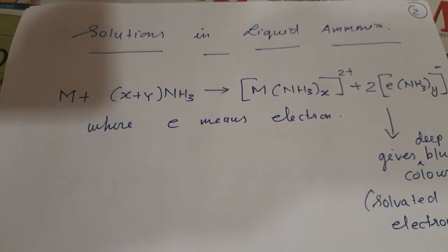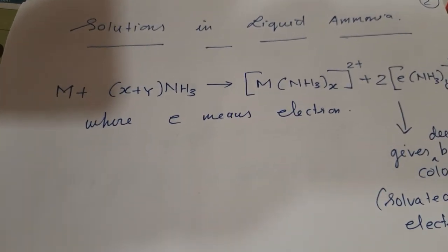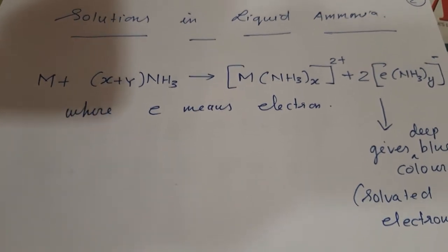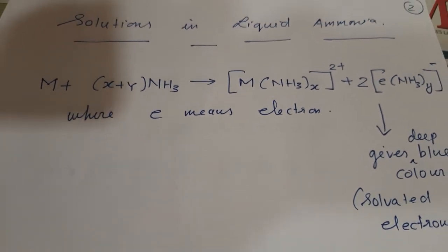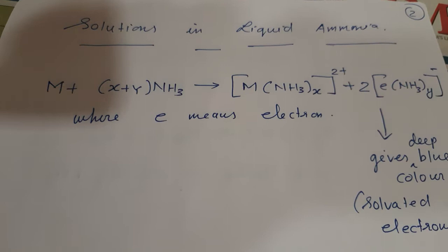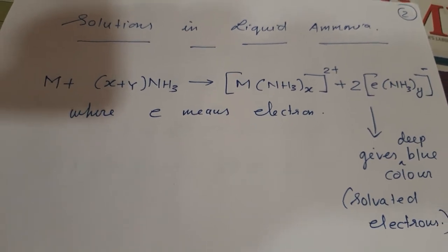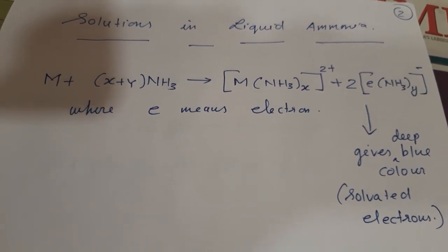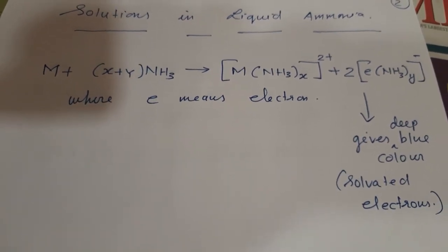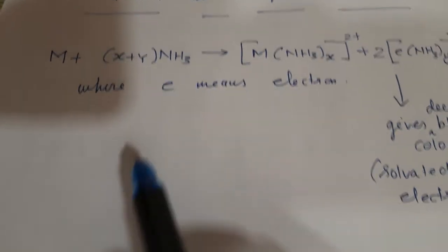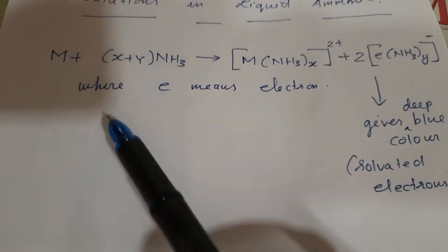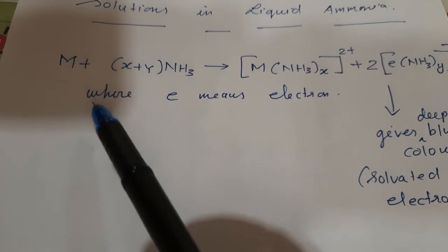Now, solutions in liquid ammonia. Like I had shown you in alkali metals, when they are dissolved in liquid ammonia they form a deep blue colored solution. They form complexes, and we don't need to go into too much detail, but whatever is written in the textbook: